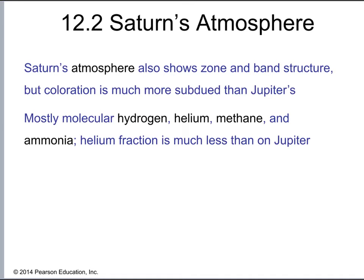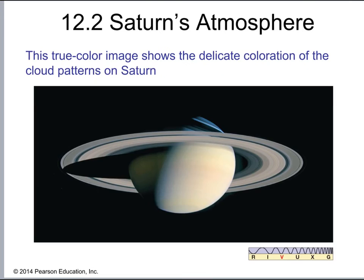But otherwise, in a lot of ways, they're very similar. Here we have a true color image of Saturn. What that means is that if you were on a spaceship looking out the window at Saturn, this is the color you would see. It looks kind of bland in a certain way, but those rings certainly make it startling to see.